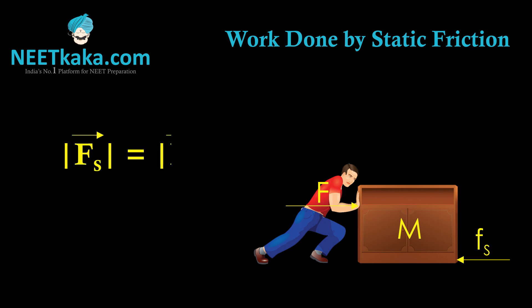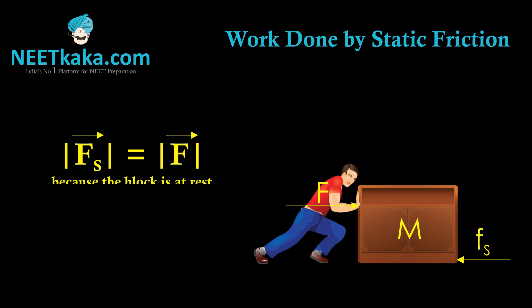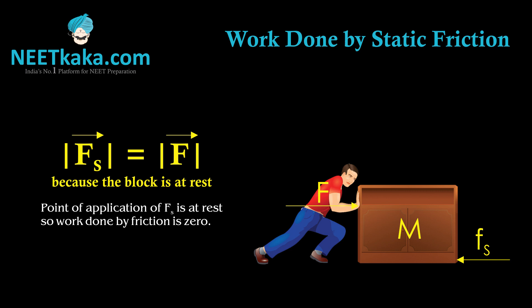The magnitude of frictional force must be equal to the magnitude of force applied by the man because the box is at rest and no other net force is acting. So the capital F applied by the man must get cancelled out by the frictional force. Because the point of application of frictional force remains at rest, the work done by frictional force in this case is 0.